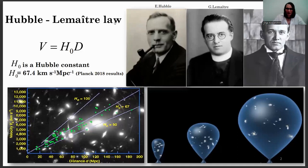In 1929, Edwin Hubble, based on data obtained by Vesto Slipher and theoretical predictions of Georges Lemaître, revealed the linear relation between the radial velocities of remote galaxies and physical distances to them. This is called the Hubble-Lemaître law, which reflects the expansion of the universe.